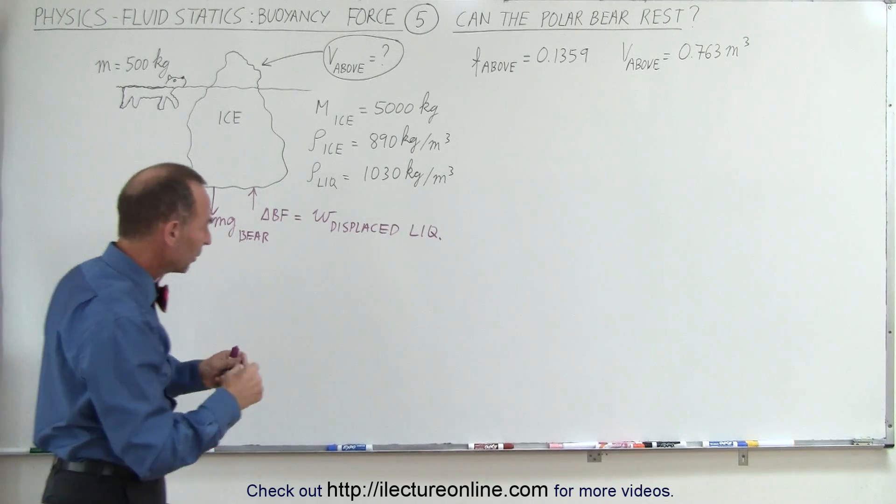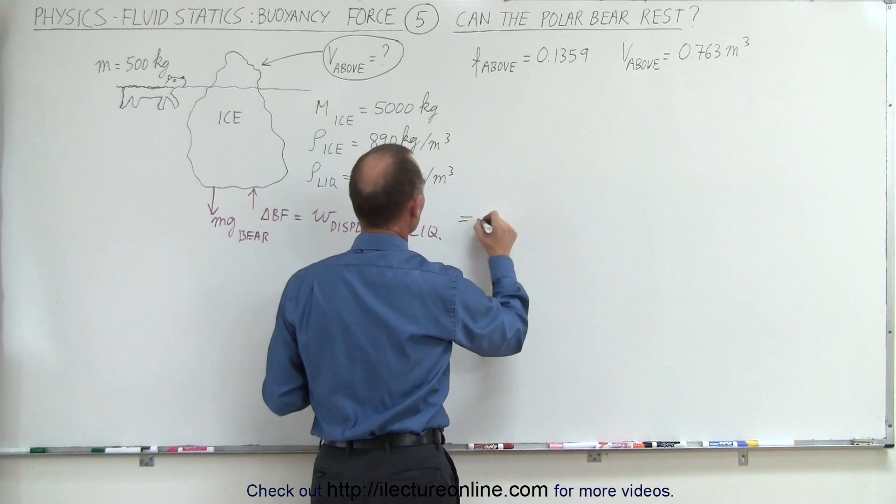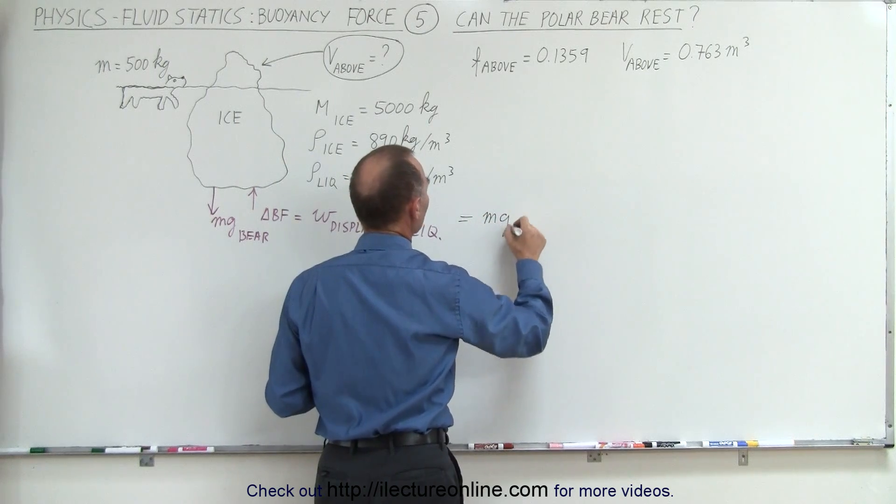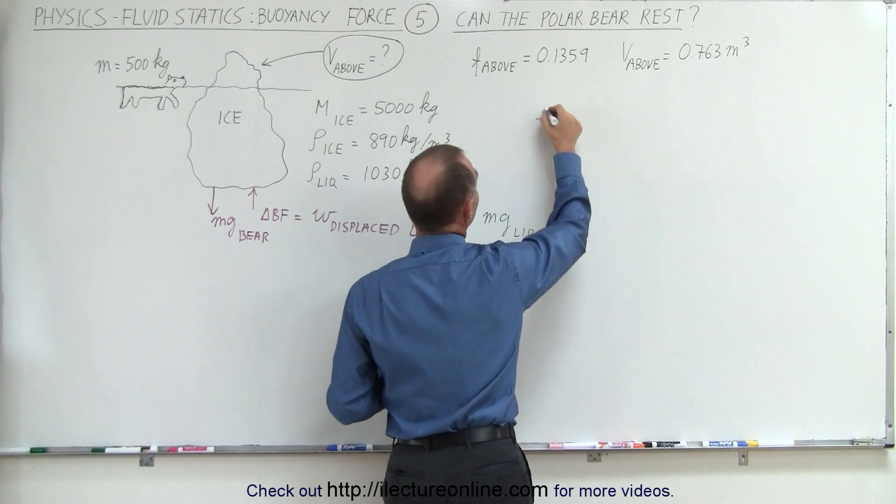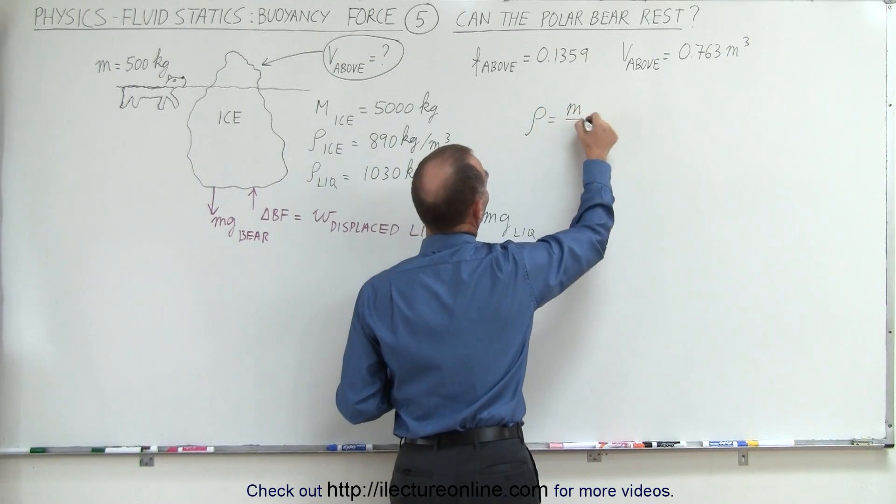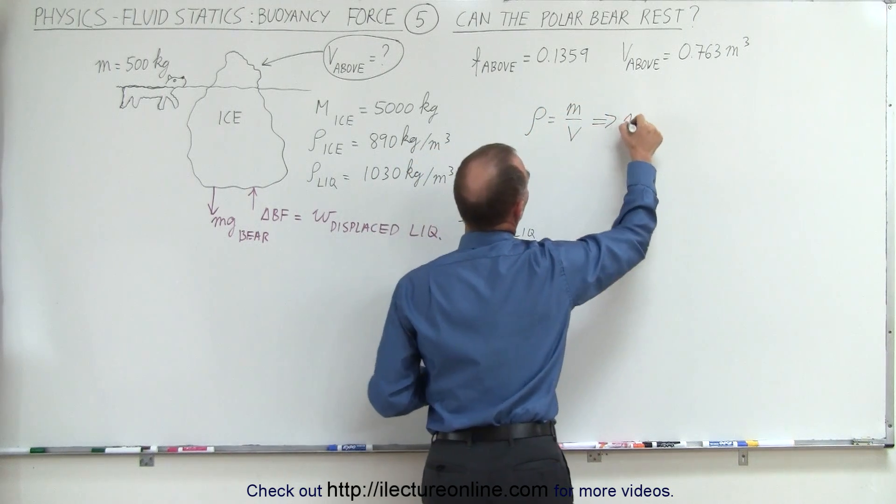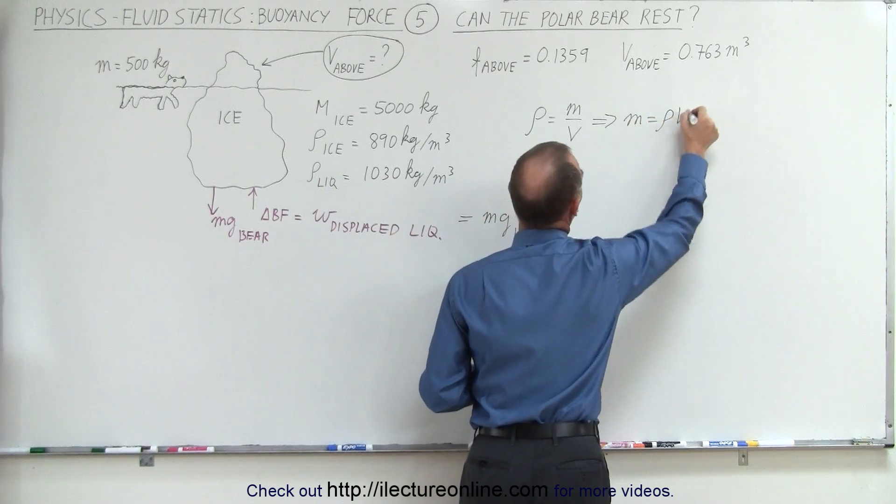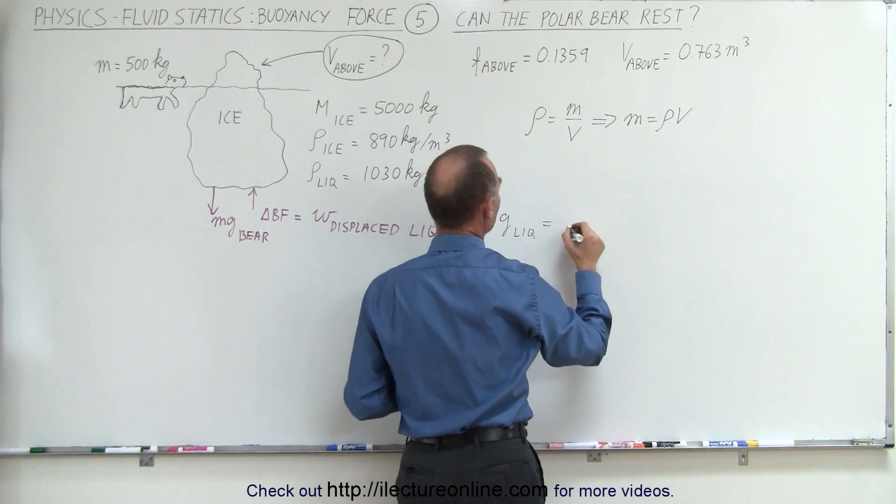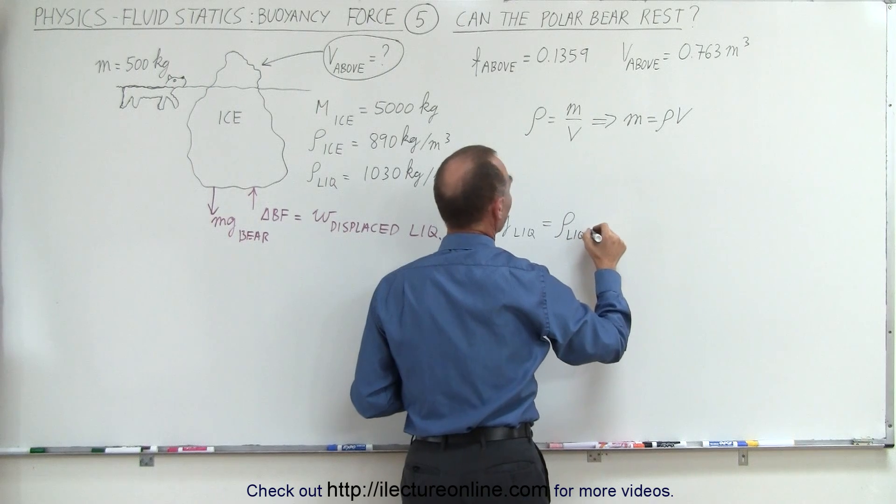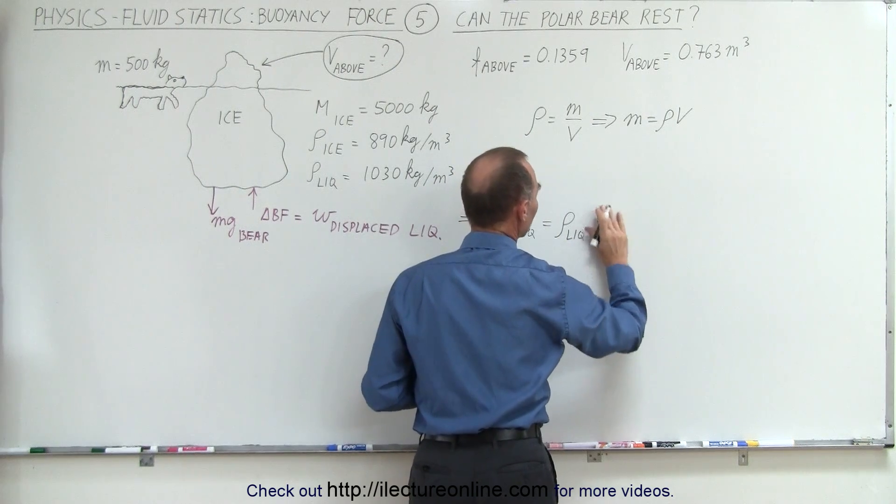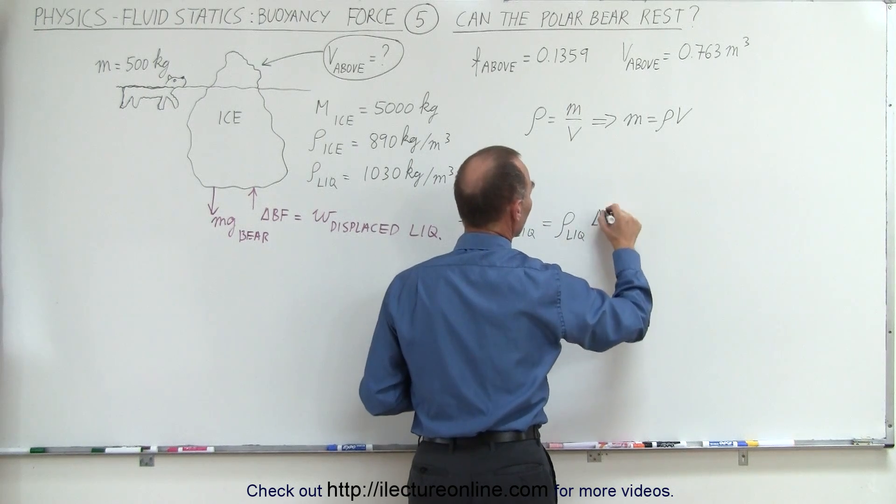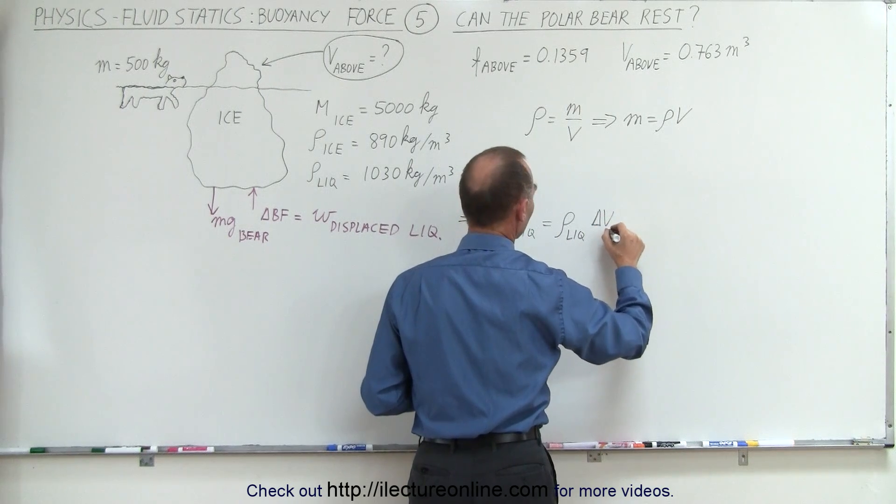Well, the weight of the displaced liquid is going to be equal to the mg of the displaced liquid. And of course, realizing that the density is equal to the mass divided by the volume, which means that the mass is equal to the density times the volume, then this would be equal to the density of the liquid times the volume, the additional volume. So let me write it as delta v, the additional volume displaced of the liquid, and times g.